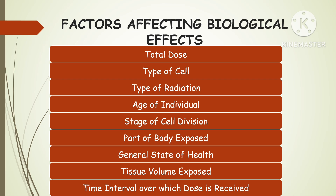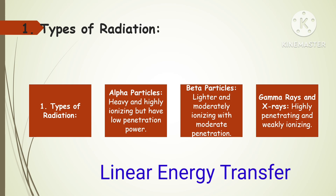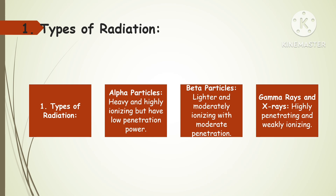The effect is also determined by individual susceptibility: the patient's age, gender, health status, and genetic factors may affect an individual's response to radiations. Biological damage caused by radiation largely depends on the type of radiation and is often quantified using linear energy transfer (LET), which measures the energy transfer per unit distance traveled in tissue. Particles with higher LET tend to cause more severe localized damage compared to rays with low LET, like gamma rays.